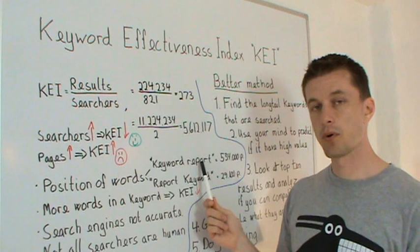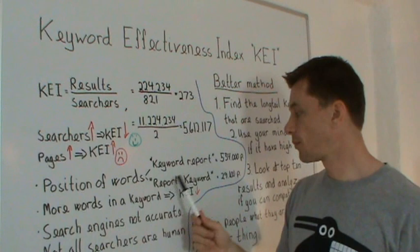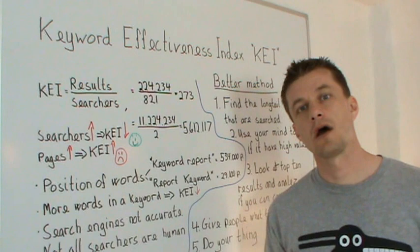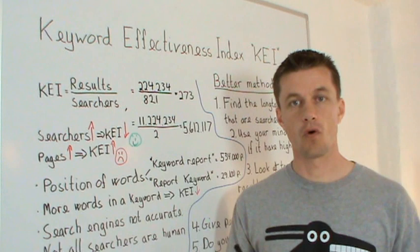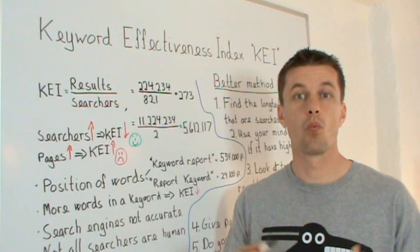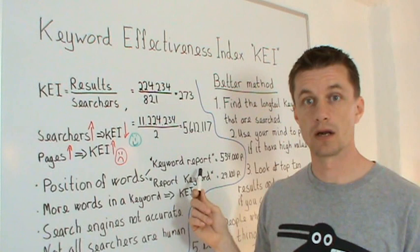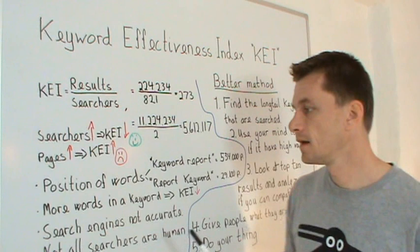Let's say you search for "keyword report" and find 534,000 results in Google. If you change the order and search for "report keyword" you get 29,100. You might ask yourself: is there 18 times less competition for "report keyword" than "keyword report"? The answer is probably no — it's probably the same results, maybe one in the top ten changed. But you still get far fewer pages competing. When you calculate KEI, the point is that in reality it's the same competition.